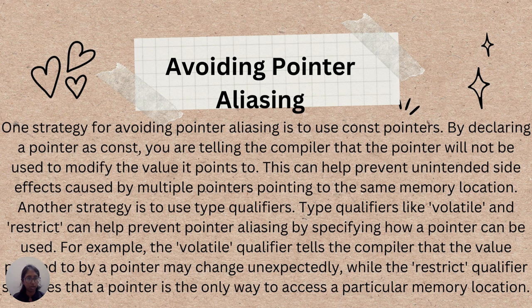One strategy for avoiding Pointer Aliasing is to use const pointers. By declaring a pointer as const, you are telling the compiler that the pointer will not be used to modify the value it points to. This can help prevent unintended side effects caused by multiple pointers pointing to the same memory location.